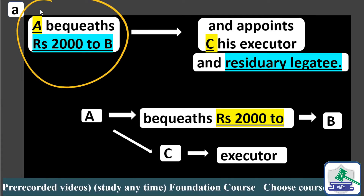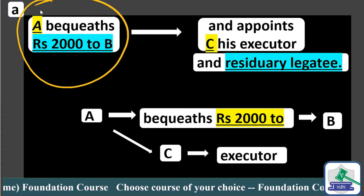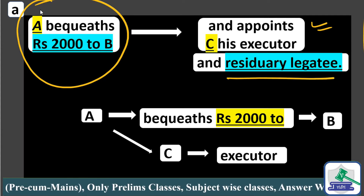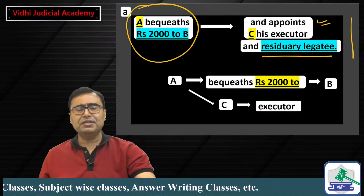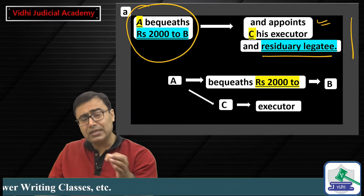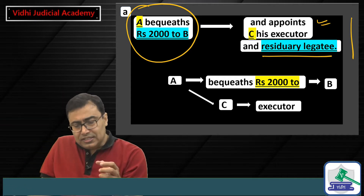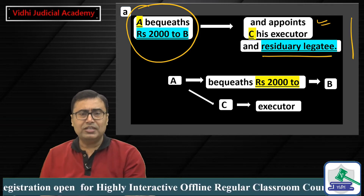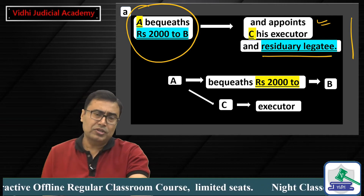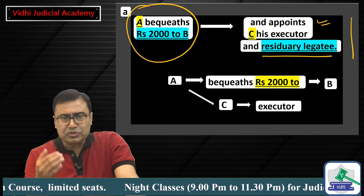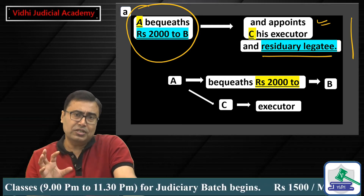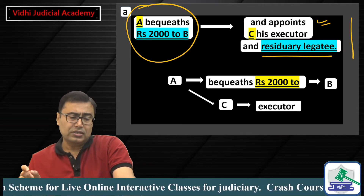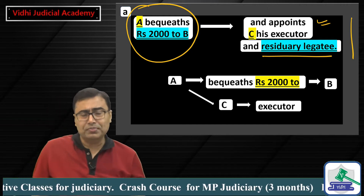A bequeaths rupees 2000 to B and appoints C as his executor. 'Residuary legatee' — its meaning should be understood. This illustration is very important for your prelims as well as mains, because this illustration may be given exactly as a problem in your mains, asking whether set-off can be pleaded or not, whether the plea of set-off is legally valid or not.